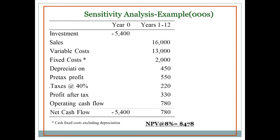Let's look at a simple example. We have a 12-year project with the same cash flows every year. We have an investment of $5.4 million, sales of $16 million, variable costs of $13 million, fixed costs of $2 million, and we use those to calculate an operating cash flow of $780,000. We'll assume this project doesn't have any intermediate changes in net working capital or net capital spending, so cash flows from assets equal operating cash flow in the intervening years.